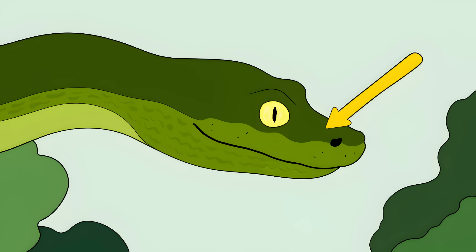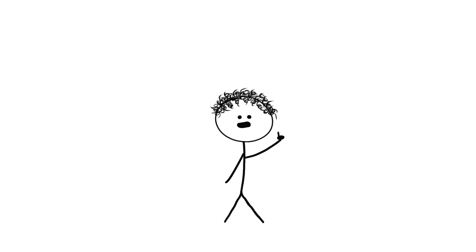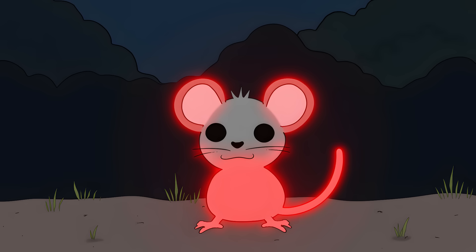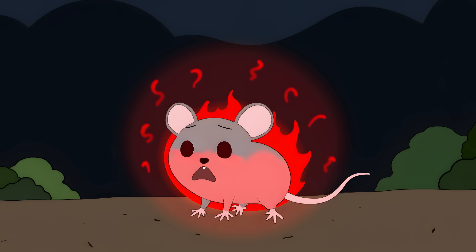These snakes have special heat-sensing pits between their eyes and nostrils. Think of them like tiny biological infrared cameras that can detect changes in temperature as small as one thousandth of a degree. Their brains actually combine this heat vision with regular vision. They're basically seeing the world in two layers at once: normal sight plus a glowing heat map overlay.